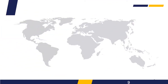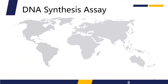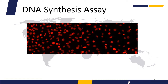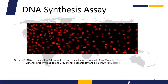On the left, 3T3 cells labeled by EdU were fixed and reacted successively with fluor-594-azide. On the right, 3T3 cells labeled by BrdU were detected using an anti-BrdU monoclonal antibody and a fluor-488 conjugated secondary antibody.